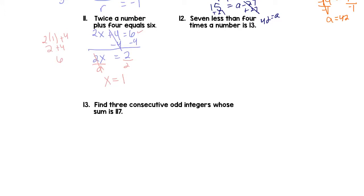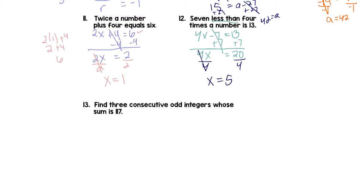Try number 12 on your own. Number 13: 7 less than 4 times a number — remember, that means we're going to flip it around and have 4 times a number minus 7, and that is 13. To get the x term alone, we're going to add 7 to each side. 4x; the 7s cancel, and that equals 20. Divide both sides by 4 to get x alone, and x is 5. Let's plug it in: 4 times 5 minus 7 is 13 — that's 20 minus 7, or 13. And 13 indeed equals 13.